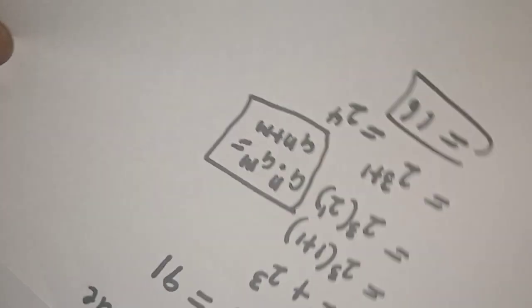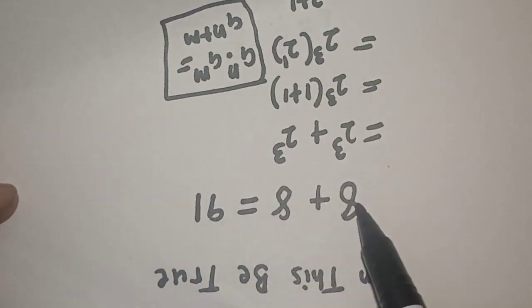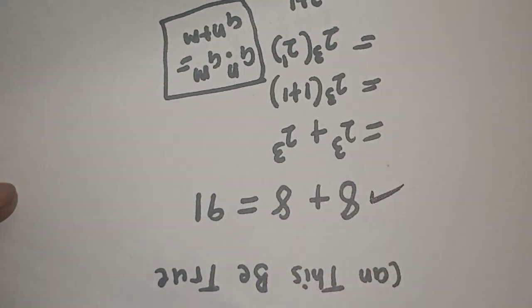If you turn it upside down, we have 16 is equal to 8 plus 8 and we've gotten the answer. So, therefore, 8 plus 8 is equal to 16, not 91.